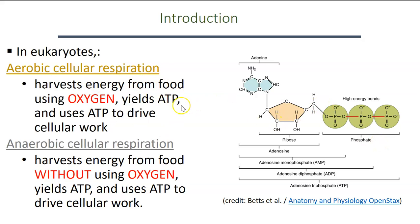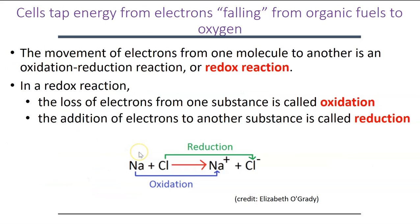Sometimes in order to make ATP, you need food but you also use oxygen in the process. If oxygen is required to form the ATP, we call that aerobic cellular respiration. If we're able to generate ATP by harvesting energy from food without oxygen, we call that anaerobic cellular respiration.